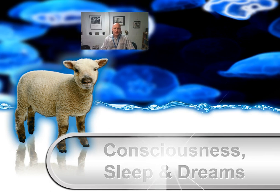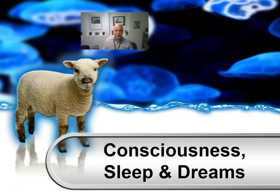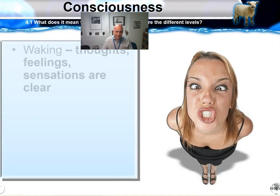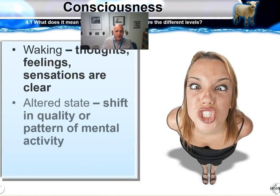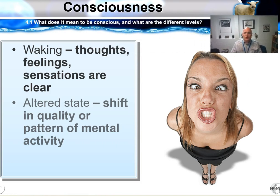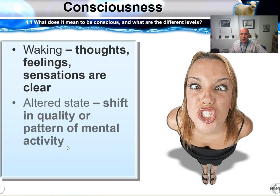We're going to talk about consciousness, sleep, dreaming, and drug use in this chapter. There are other types of altered states of consciousness such as hypnotism, but for the sake of time we don't talk about that as much. Anything that you would do to alter brainwave activity is an altered state of consciousness. If you're in normal thought patterns and normal sensations, that's what we call waking consciousness.